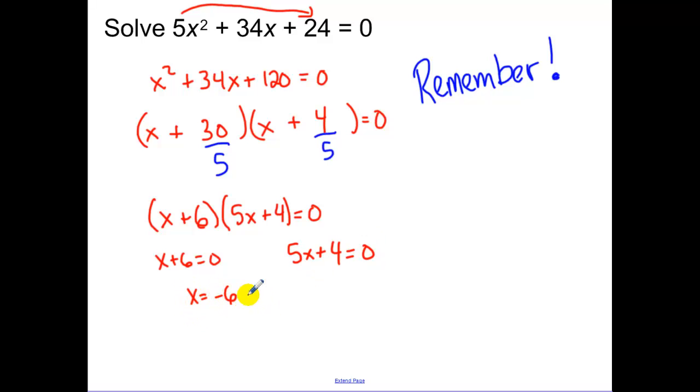So then we get negative six, and we get negative four fifths. And if you have to go through solving this five x plus four by hand, by subtracting the four and dividing by the five, don't be ashamed to do that. The more work you show me, the more points I can give you, even if you make a silly little mistake.